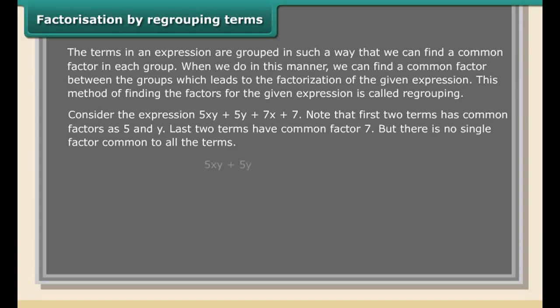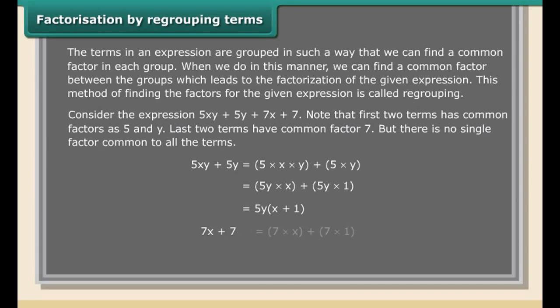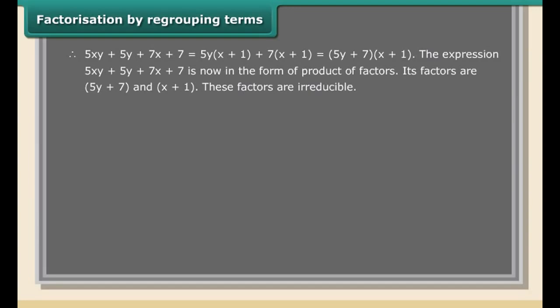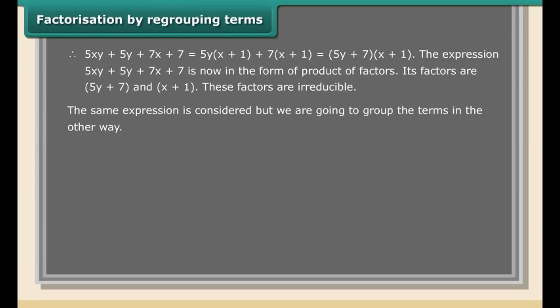5xy + 5y = 5 × x × y + 5 × y = 5y(x + 1). And 7x + 7 = 7 × x + 7 × 1 = 7(x + 1). So the expression 5xy + 5y + 7x + 7 is now in the form of a product of factors: (5y + 7)(x + 1). These factors are irreducible.